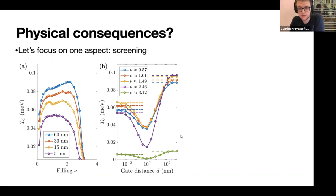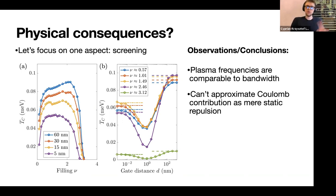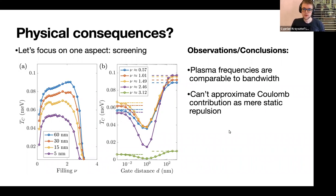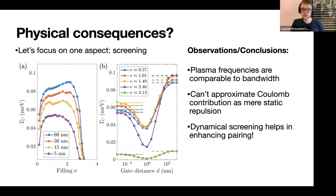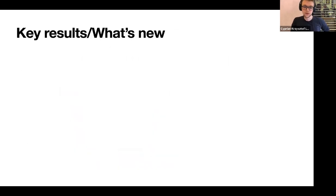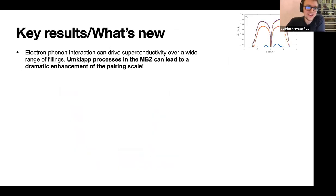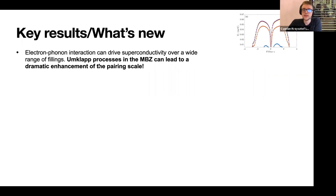Looking at the physical consequences: you can think of taking TBG and, with the help of a gate, suppressing the pairing. As you bring the gate closer, Tc decreases, as expected because the additional bonus coming from plasmons is being killed, and we end up with a phonon dome. But what's interesting — and you shouldn't look too much at the values — is the possibility of non-monotonic behavior with the gate. When the gate is at infinity, both plasmons and phonons contribute. As you bring the gate closer, you suppress the attractive part of the electron-electron interaction.